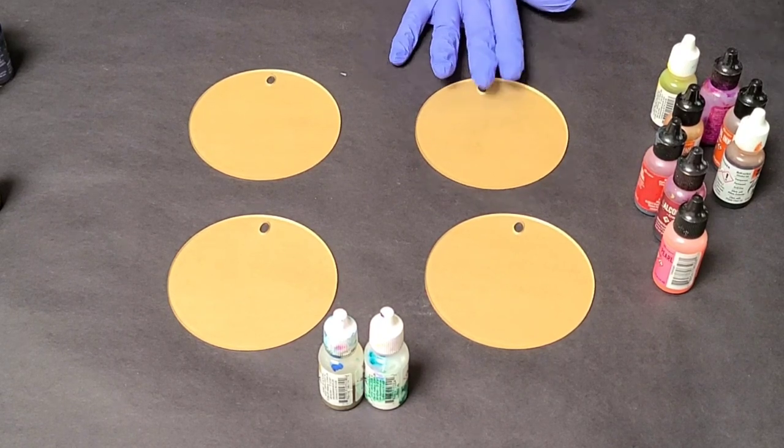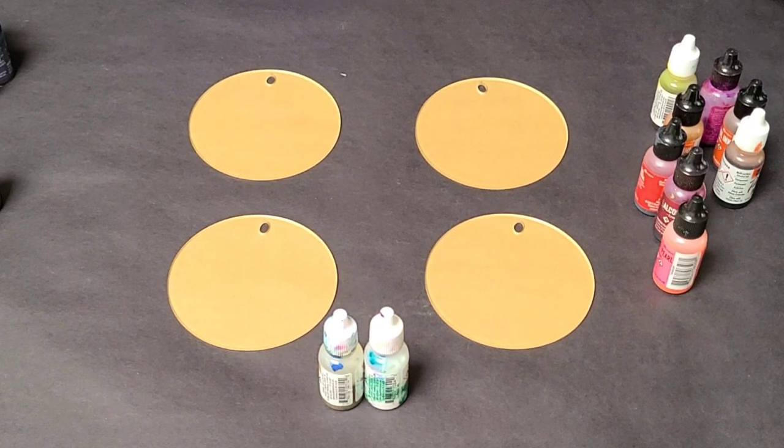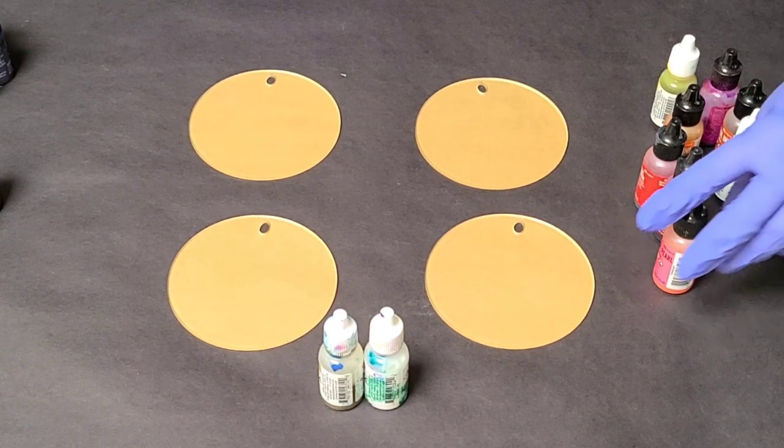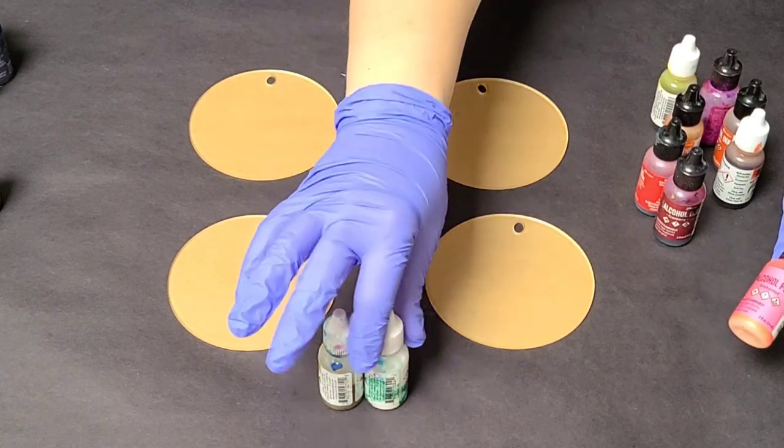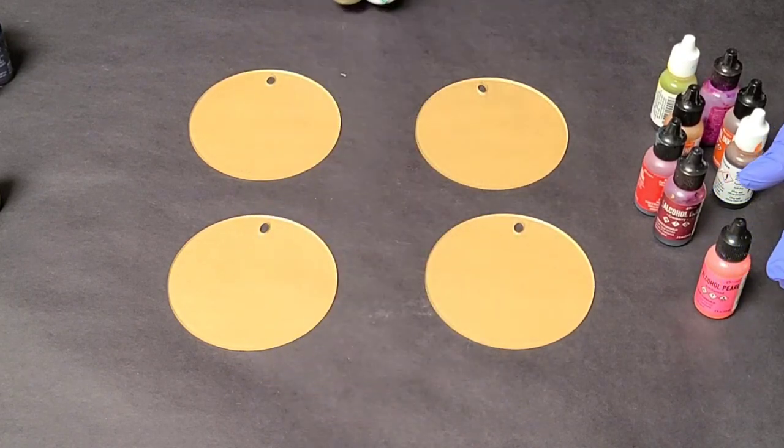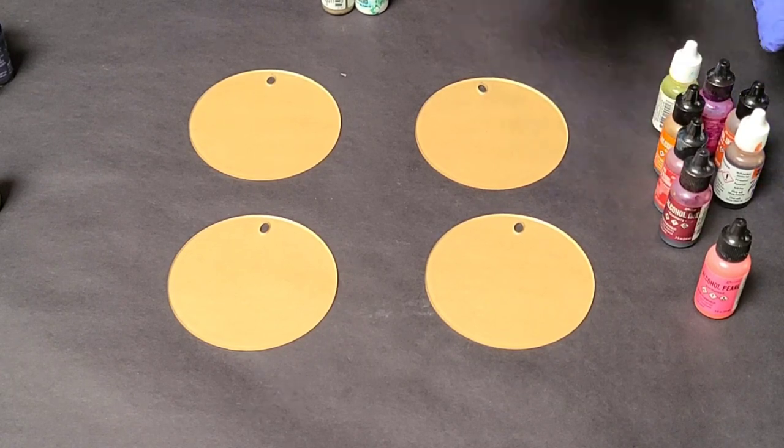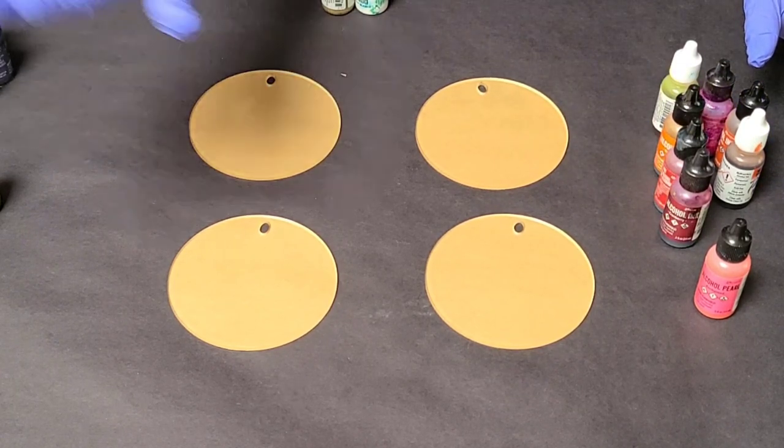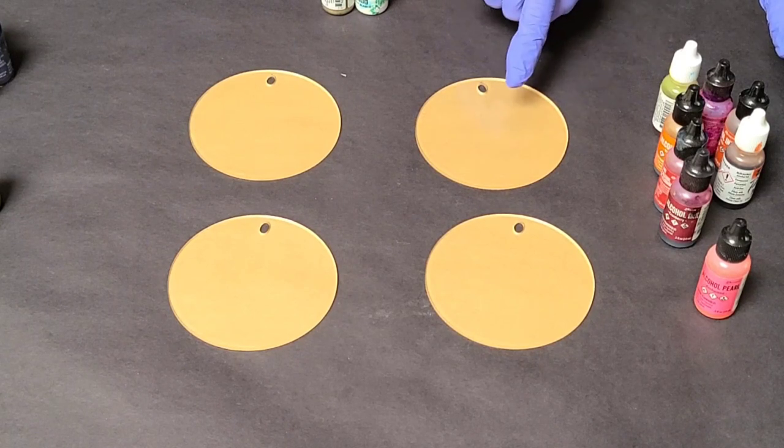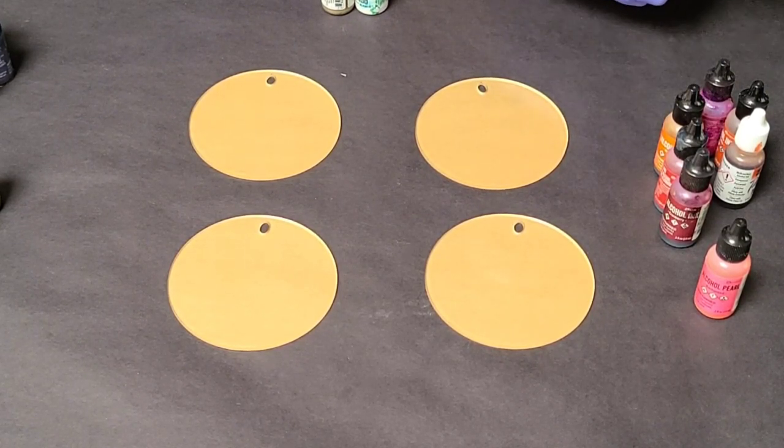No mess, no stress. Johnny has never worked with alcohol inks before. So this is something completely new to him, and we're going to have some fun. And we're using Ranger and Pinata alcohol inks. I'm going to actually do these back here. So we're just going to have some fun. We picked out different color schemes. He's going to be doing purple and then green on one, and I'm going to do warm colors. I haven't exactly decided, but here we go.